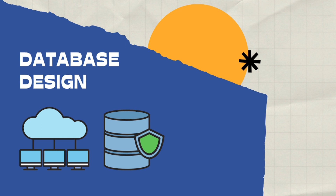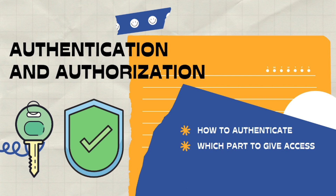Coming to the next point: authentication and authorization. This is very important because Django's authentication system is already very powerful, and people use it widely. Django provides a framework for authentication and authorization. You can also use a custom user model — in Django's default user model there is a set of fields, and you can override it using two classes: AbstractUser and AbstractBaseUser.